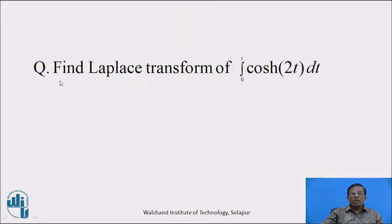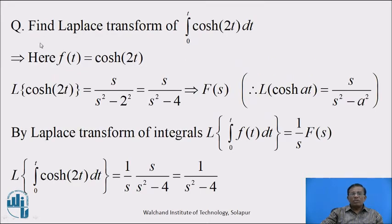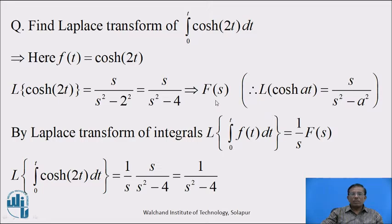Now pause the video and write the answer to the question: find Laplace transform of integration with limit 0 to t of hyperbolic cos of 2t dt. Here f of t means hyperbolic cos of 2t. We find Laplace transform of hyperbolic cos of 2t, which equals s upon s square minus 2 square, that is s upon s square minus 4, denoted by F of s, using the formula Laplace of hyperbolic cos at equal to s upon s square minus a square.